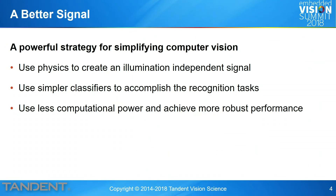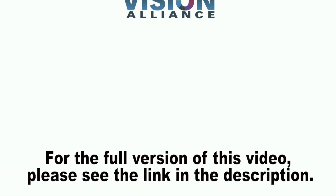That means you can use those remaining 8,989 operations to do something else. Our argument is that this is a powerful strategy for simplifying computer vision: use physics to deal with the complexities of your illumination signal, then use your classifiers on a signal that contains only the information you want. The fact that a tree casts a shadow across your turn lane has nothing to do with the lane lines. Get rid of that using physics and expert knowledge, and the overall system can solve the problem more robustly with lower computational power.